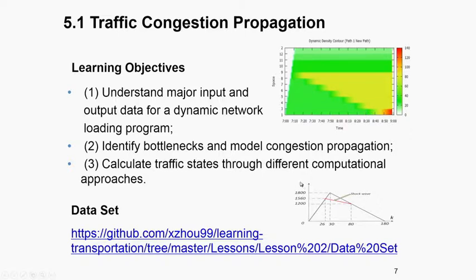This is a traffic flow and traffic density relationship. By using this analytical formulation, you can literally show the shock wave. The red line here is a shock wave which corresponds to the shock wave between the green block and the yellow block.